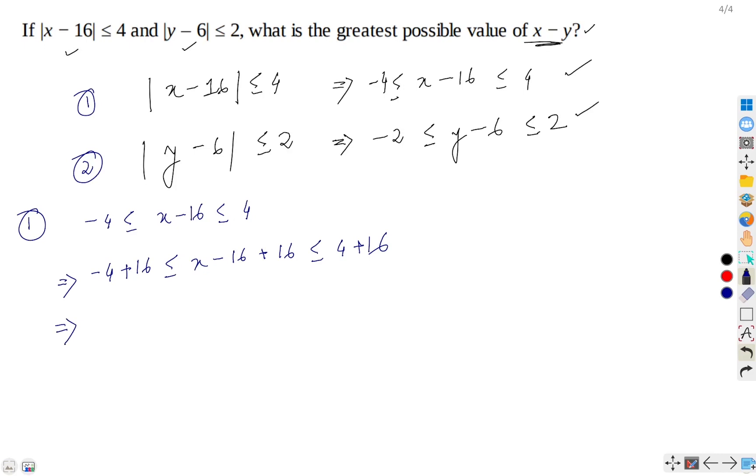So, this is 12, and 16 will get cancelled out, we have x ≤ 20.